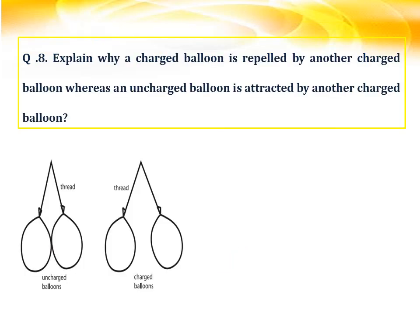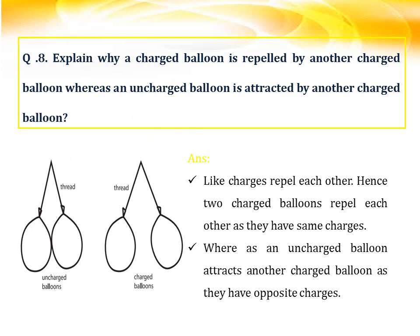Question number eight: explain why a charged balloon is repelled by another charged balloon, whereas an uncharged balloon is attracted by another charged balloon. We know that like charges repel each other. Hence when two charged balloons are brought together, they repel each other as they carry the same charges. Whereas an uncharged balloon attracts another charged balloon because opposite charges attract each other.